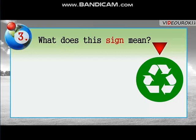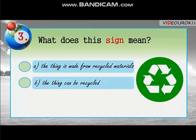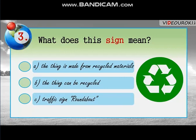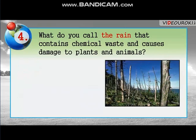Question number three: What does this sign mean? A — the thing is made from recycled materials. B — the thing can be recycled. C — traffic sign roundabout. The correct answer is A — the thing is made from recycled materials.